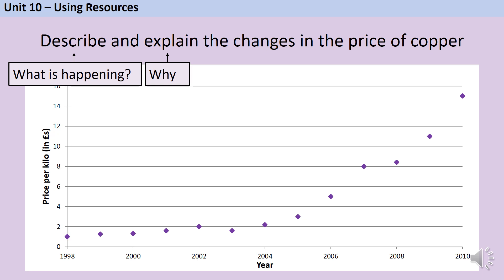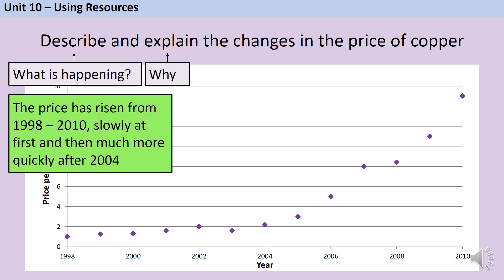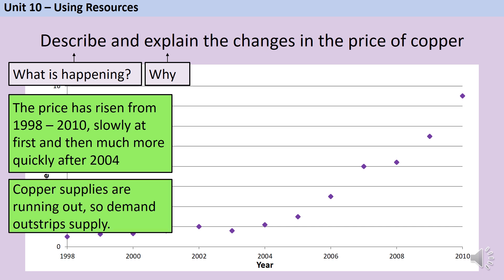The price of copper has risen from 1998 until 2010. To start with it rises very slowly, but later from about 2004 onwards it has risen much more quickly. The reason for this is that supplies of copper are running out, so the copper that's still available becomes much more expensive as demand for it outstrips the supply.